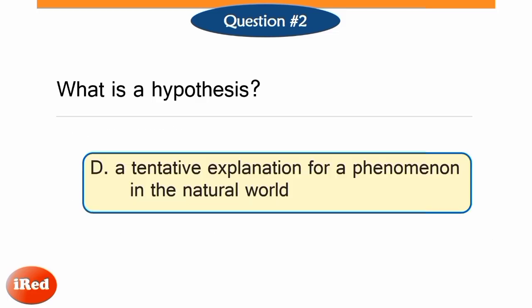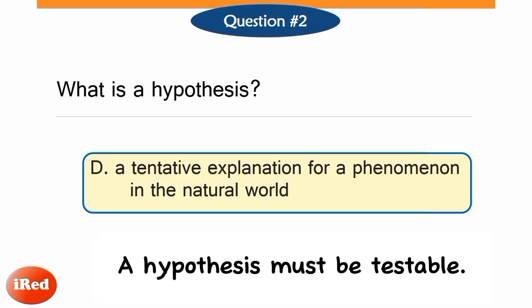The correct answer is letter D: a tentative explanation for a phenomenon in the natural world. When we say tentative explanation, it means it is not yet verified and can be tested by further investigation. Thus, a hypothesis should be testable and falsifiable. If a statement cannot be tested and disproved, then it is not a hypothesis.